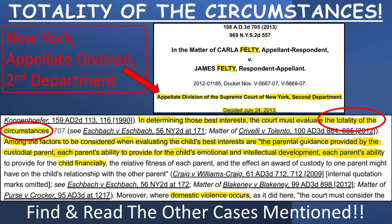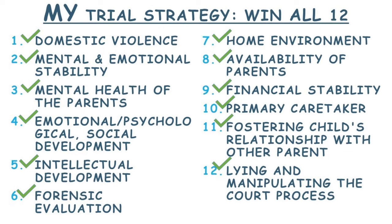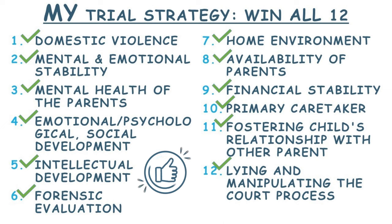In episode 5a, we discussed the Felty v. Felty case, which said: in determining best interests, the court must evaluate the totality of the circumstances — among the factors to be considered are the parental guidance provided by the custodial parent, each parent's ability to provide for the child's emotional and intellectual development, etc. Evaluate all best interest factors. Many lazy family lawyers and judges focus on only three to four factors. Instead, analyze 10 to 15 best interest factors to prove the majority favor you as the custodial parent. This helps you outperform family lawyers who focus on only a few factors, and you show the judge you're the parent who understands the total picture.